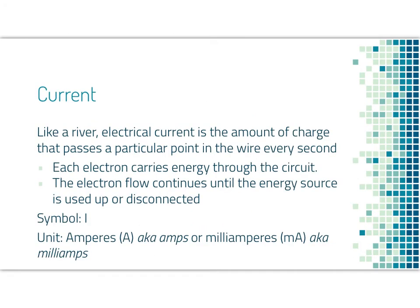Current. So like we would describe the current in a river, electrical current is the amount of charge or the number of electrons that pass a particular point in the wire every second. Each electron carries energy through the circuit. So the more electrons there are moving, the more energy there is available to the circuit. The electron flow continues until the energy source is either used up or disconnected.